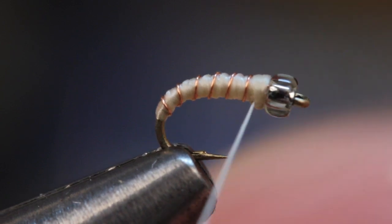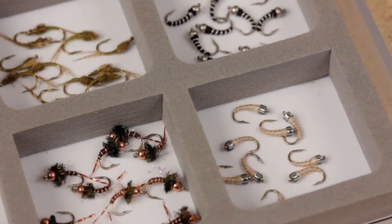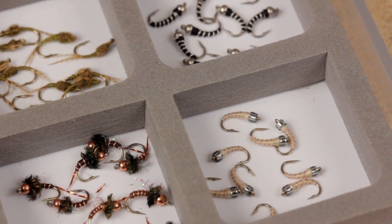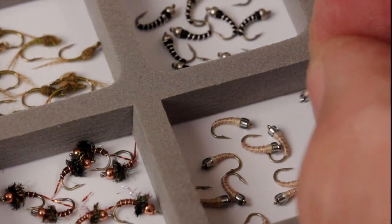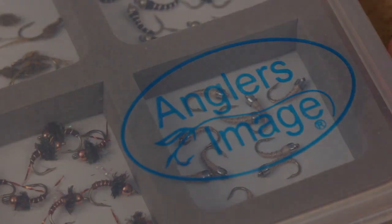This video was shot very close up, so you may be surprised just how small a size 22 hook looks in your vise. But with a little practice you'll find the Mercury Midge is a fairly simple pattern to tie. I know some people who use them year round, but for me Pat Dorsey's creation is kind of the quintessential winter midge pattern.